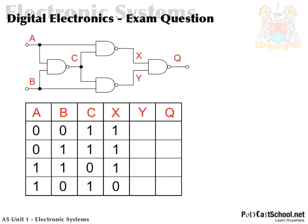Now all we've got to do is get Y. For Y, we're looking at B and C — those two columns. So: 0 and 1 gives 1; 1 and 1 gives 0; 1 and 0 gives 1; and 0 and 1 gives 1. Just using the basic NAND truth table to work that out. Q is the result of X and Y with a NAND function: 1 and 1 gives 0; 1 and 0 gives 1; 1 and 1 gives 0; and 0 and 1 gives 1.